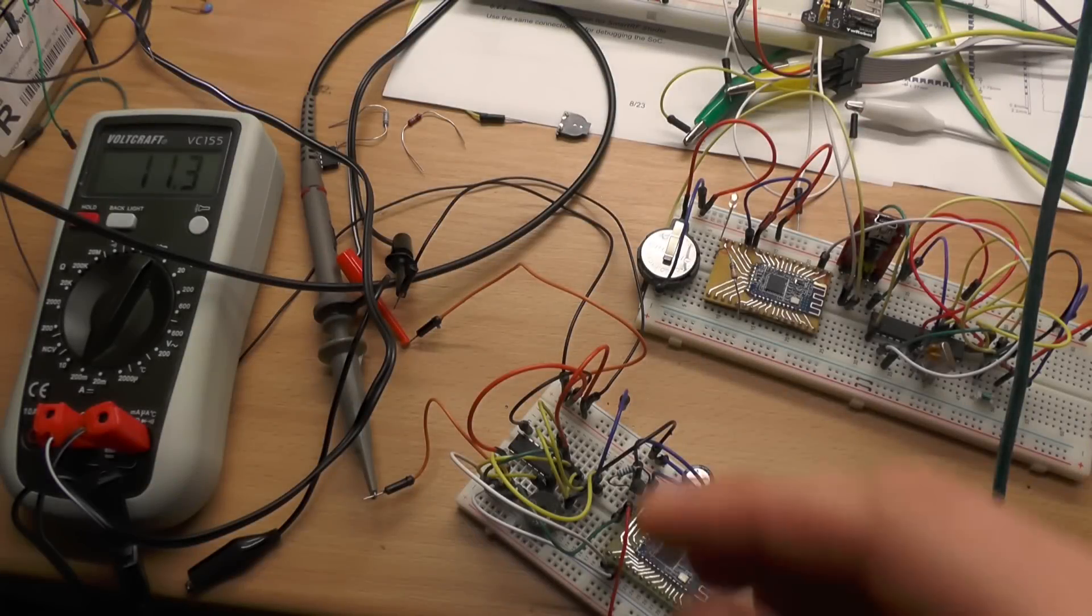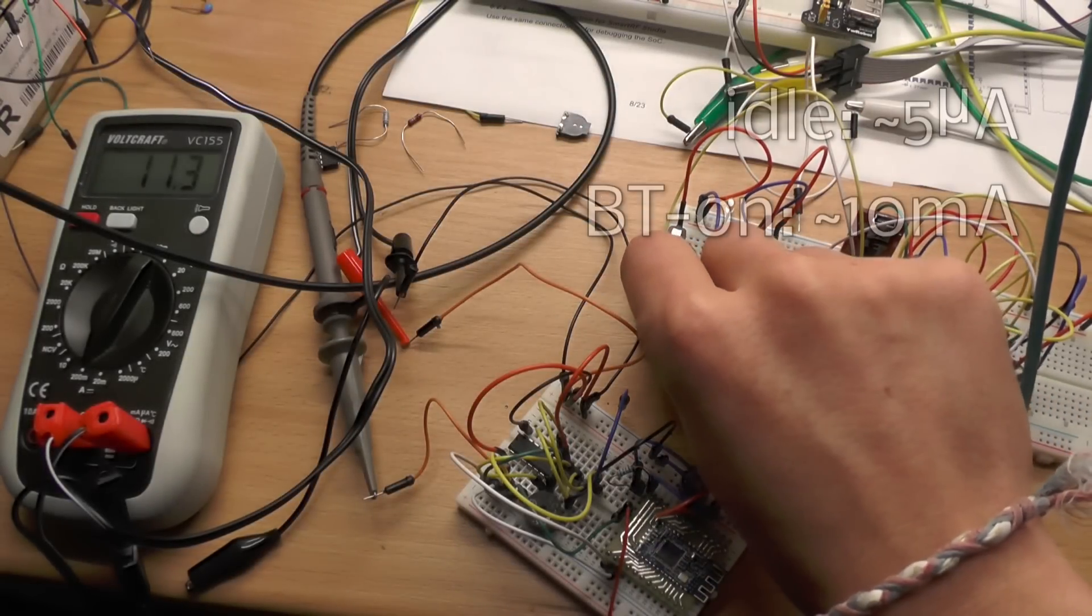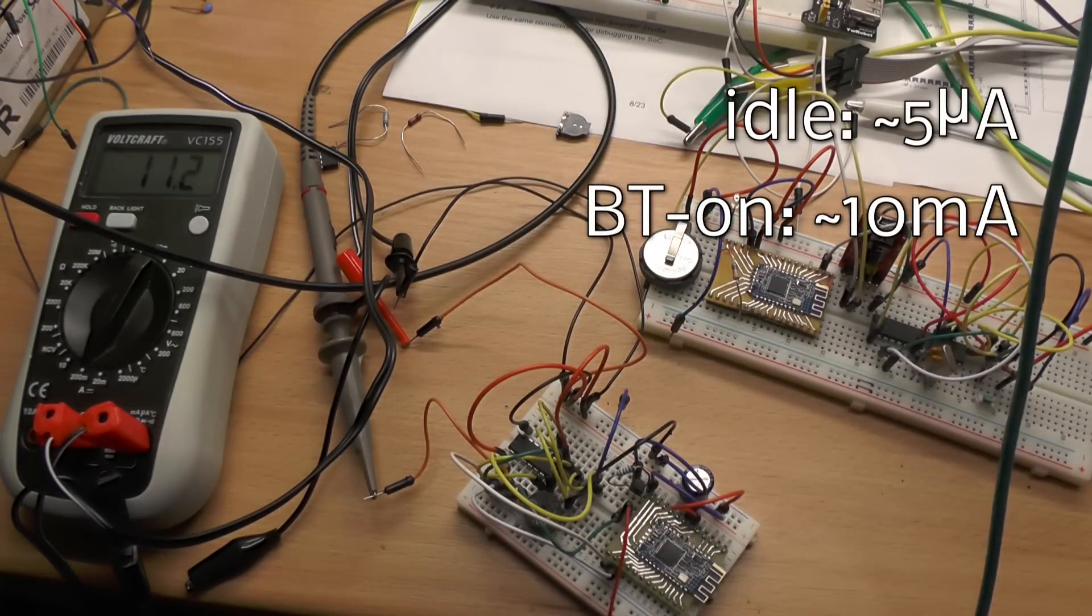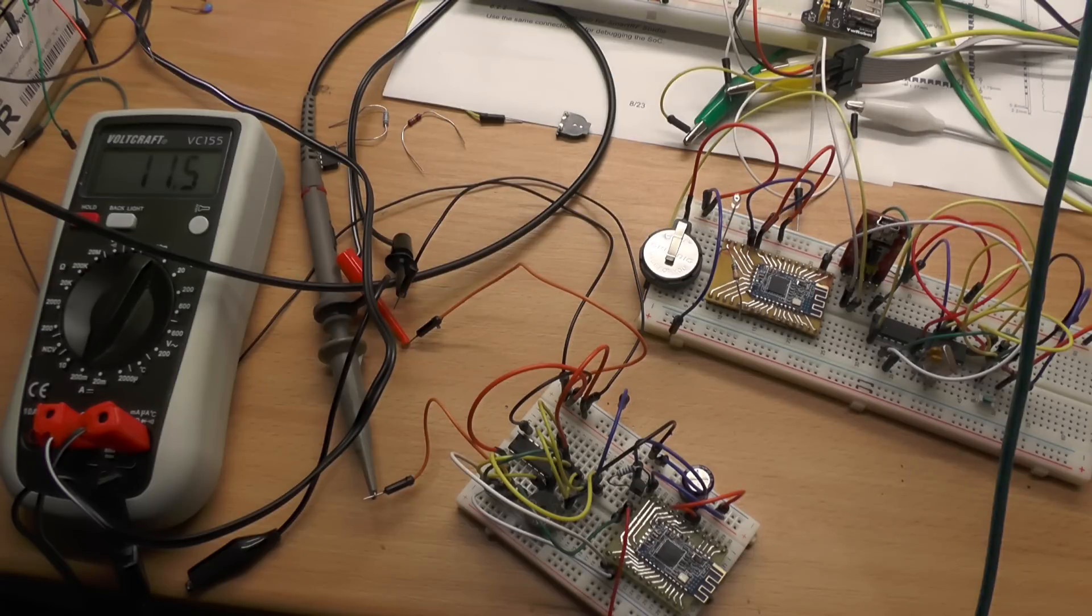After adding the power off mode and the watchdog timer, the consumption went down to 5 microamps during the idle phase. This phase lasts for 8 seconds and then the ATtiny restarts again and checks the Bluetooth.